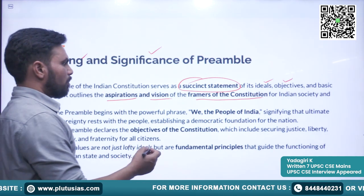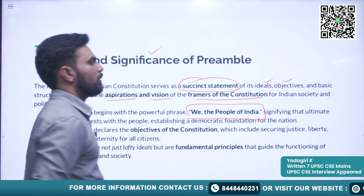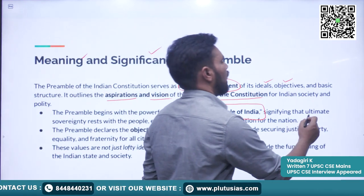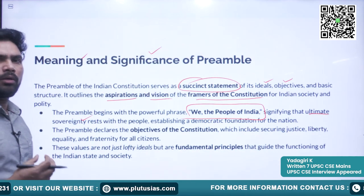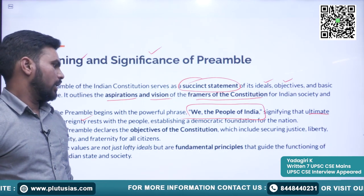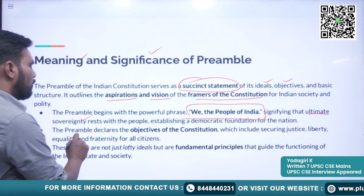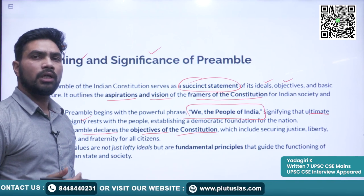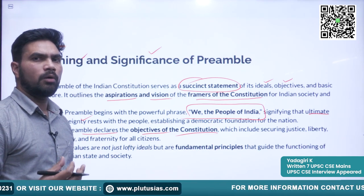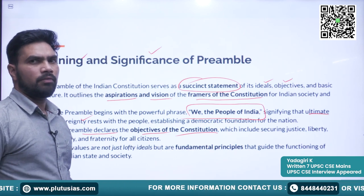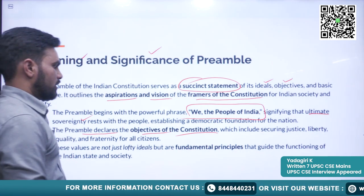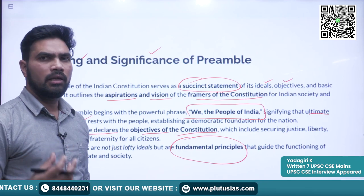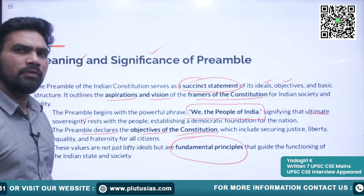The preamble begins with the powerful phrase 'We the People of India,' which signifies that people are the ultimate sovereignty — the ultimate power rests with the people of India. The preamble also declares the objectives of the constitution, meaning what the constitution strives to achieve. It also gives the fundamental principles through which the country is governed. This is the significance of the preamble.